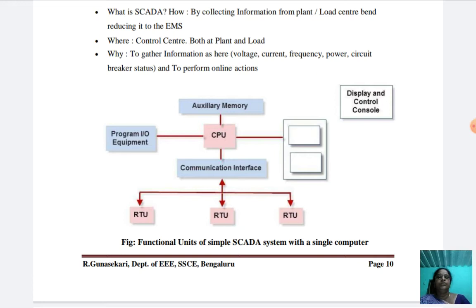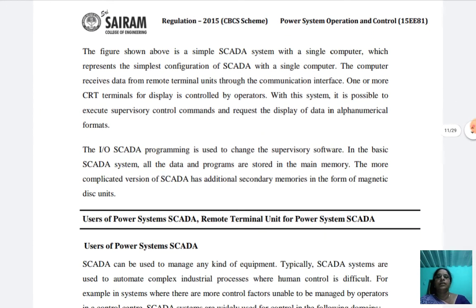Now we study the function of the simple SCADA system. The simple SCADA system represents the simplest configuration of SCADA with a single computer. The computer receives data from remote terminal units through the communication interface. One or more CRT terminals for display are controlled by operators. With this system, it is possible to execute supervisory control commands and request the display of data in alphanumerical format. The input-output SCADA programming is used to change the supervisory software.